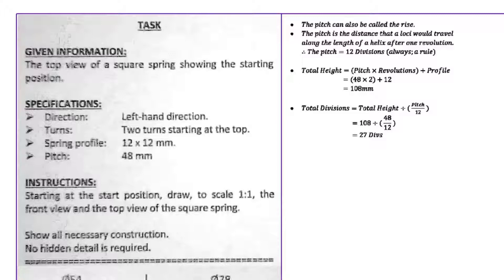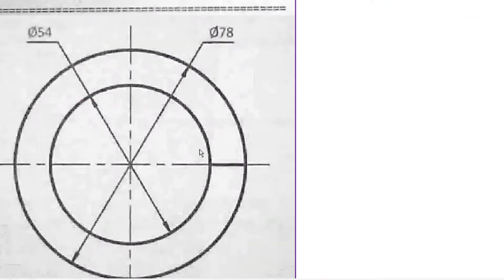The direction is left-hand, but it can also be referred to as anti-clockwise or left-around — please take note of those synonyms. It's two rotations or two turns, also called revolutions. The spring profile is a square that's 12 by 12 millimeters and the pitch is 48.